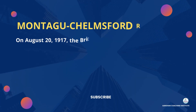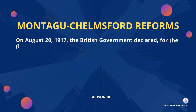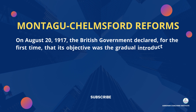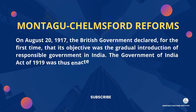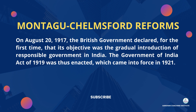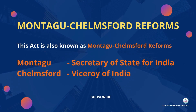On 20 August 1917, the British government for the first time declared that its objective was the gradual introduction of responsible government in India. The Government of India Act of 1919 was thus enacted. This act came into force in 1921. It is also known as the Montagu-Chelmsford Reforms because Montagu was the Secretary of State for India and Lord Chelmsford was the Viceroy of India during this period.